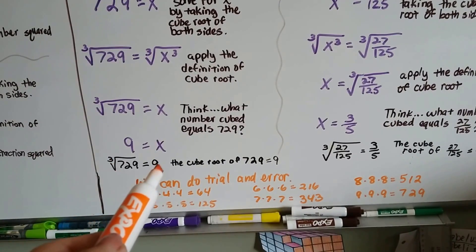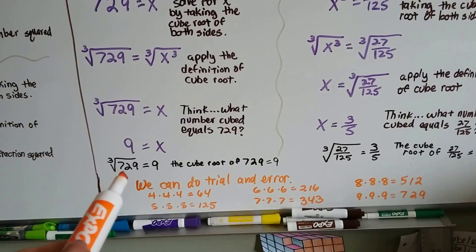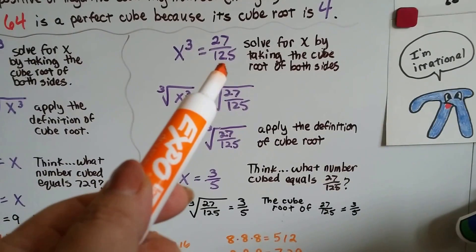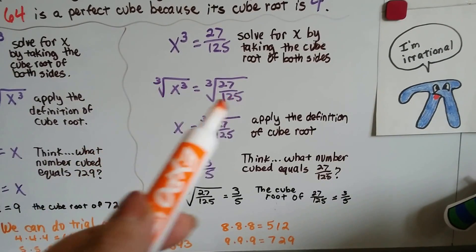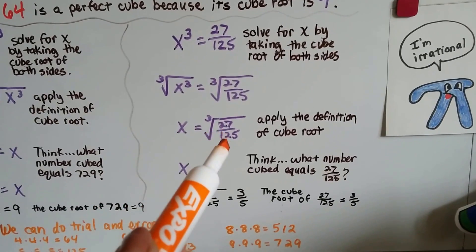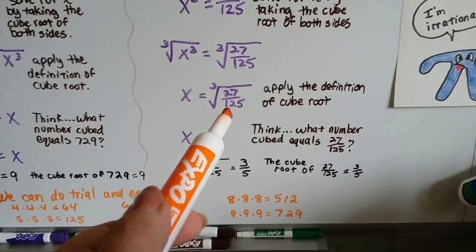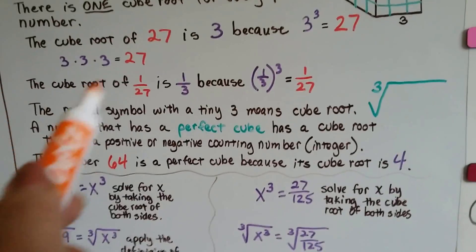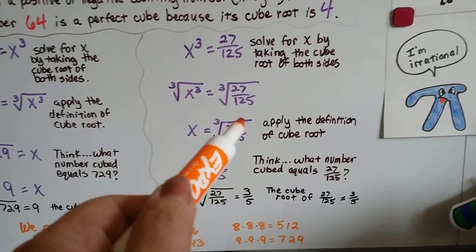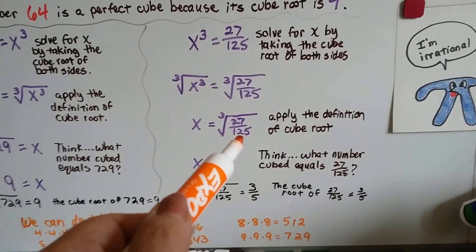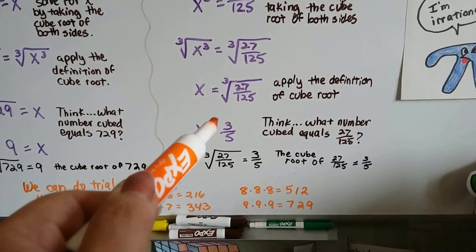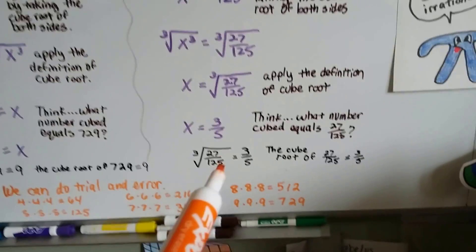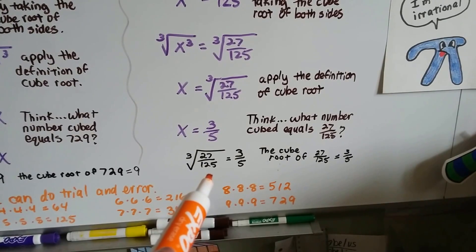The cube root of 729 equals 9 — that's how you would read this. We can do it with fractions too. If x cubed equals 27 over 125, we solve for x by taking the cube root of both sides. We apply the definition of a cube root: some number multiplied to itself 3 times equals 27 over 125. We know 3 times 3 times 3 is 27, so the numerator is 3. And what number multiplied to itself 3 times makes 125? A 5 does. So we end up with 3 fifths. That's the number that when cubed makes 27 over 125, so this would be read as the cube root of 27/125 equals 3 fifths.